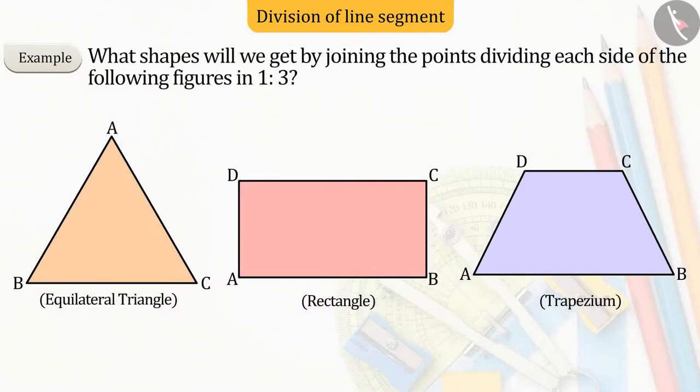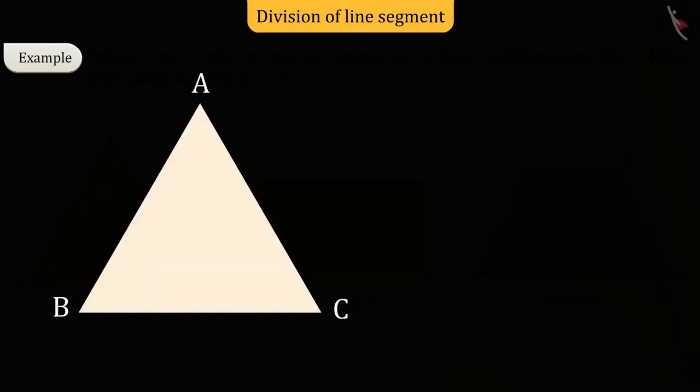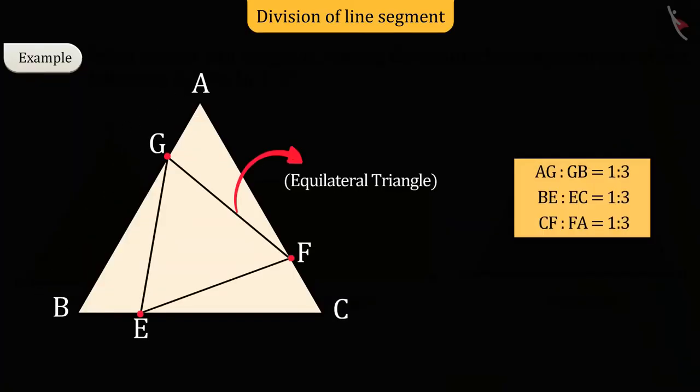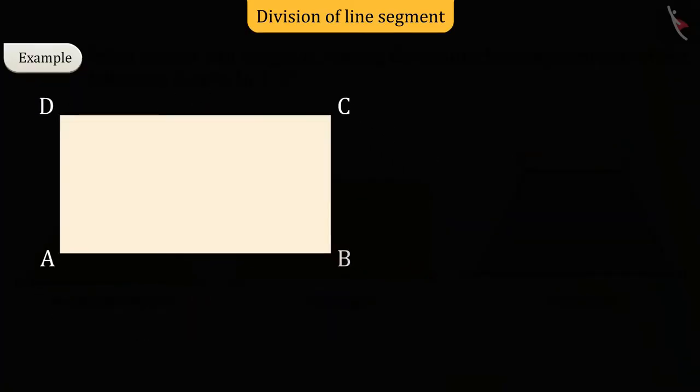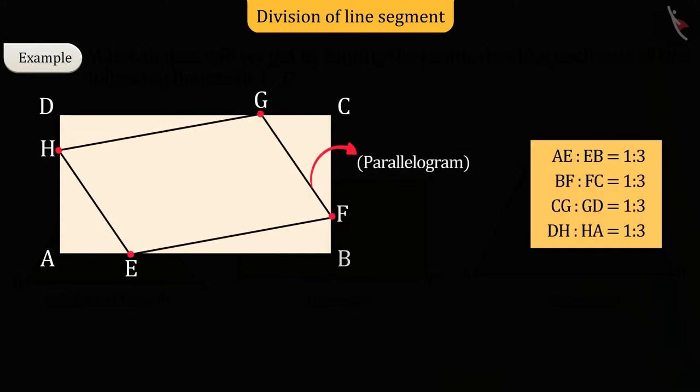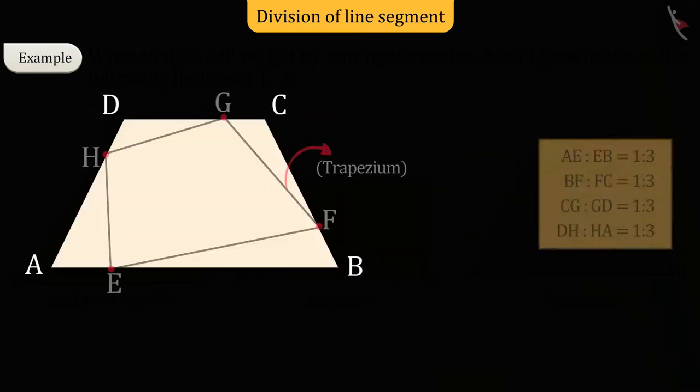When we do that, we get an equilateral triangle inside an equilateral triangle, a parallelogram inside a rectangle, and a trapezoid inside a trapezium.